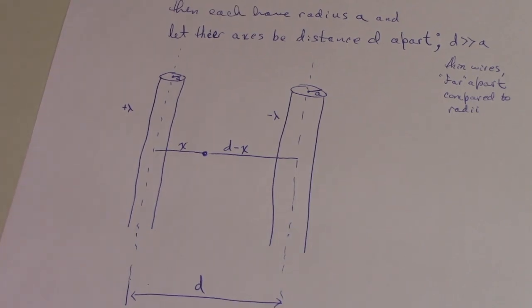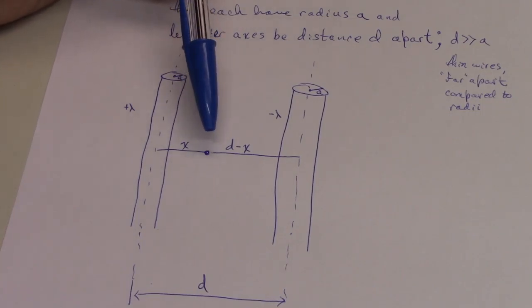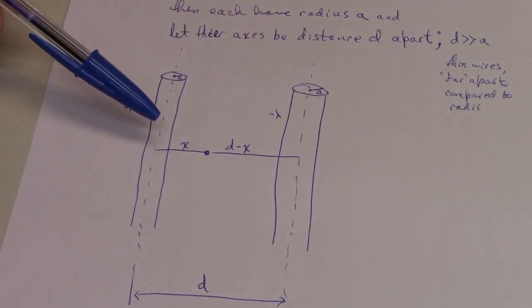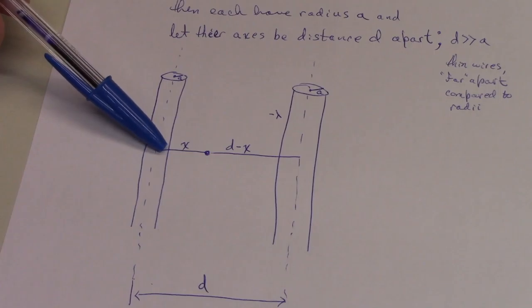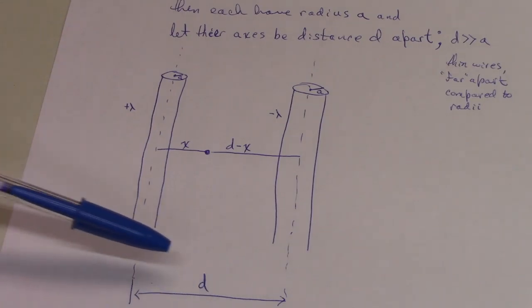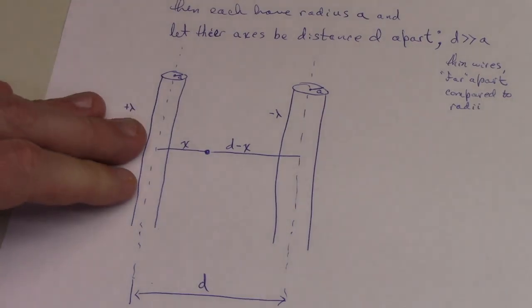The next thing we assume is that d is much greater than A. So the wires are far apart compared to the thickness of the wires. We're going to express the electric field at a point in between these two wires, which we'll call a distance x from the middle part of the left wire. Because these are d apart from one another, this distance is d minus x.